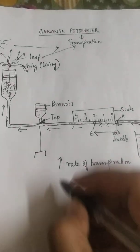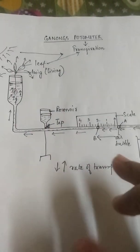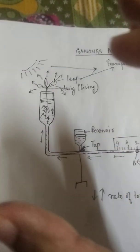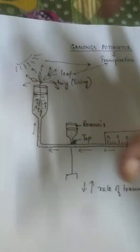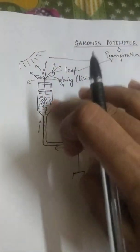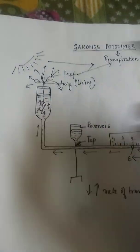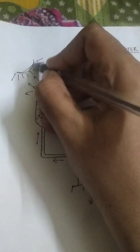If it has traveled a long distance within a very short span of time definitely the rate will be high. And if it has traveled a very small distance say it has moved from 0 to 1 only within a particular span of time so definitely the rate of transpiration will be low.